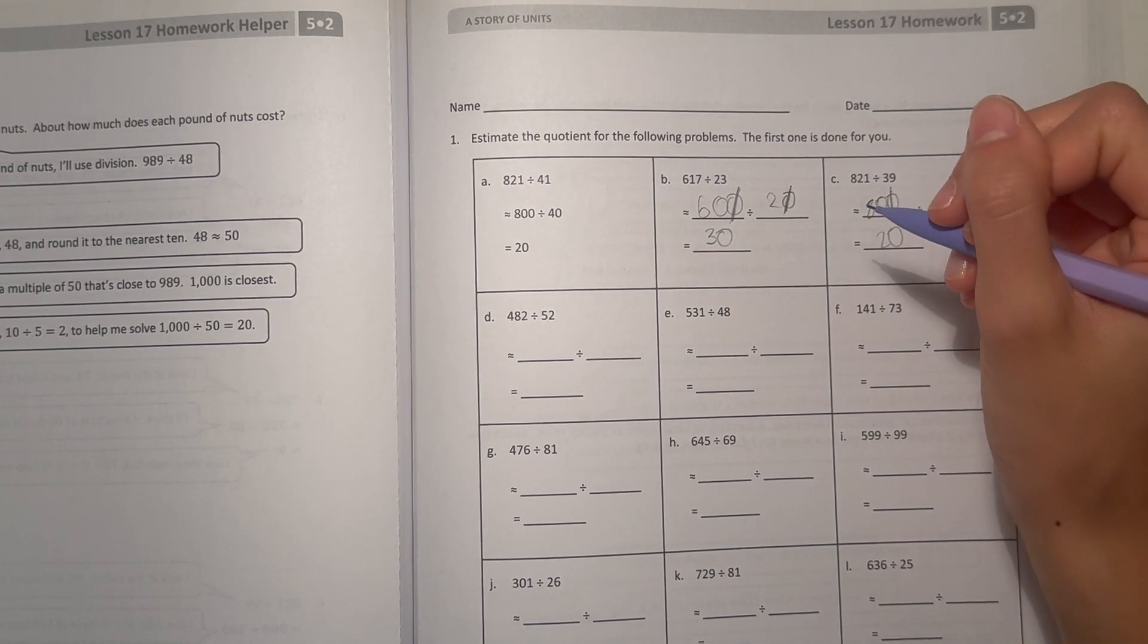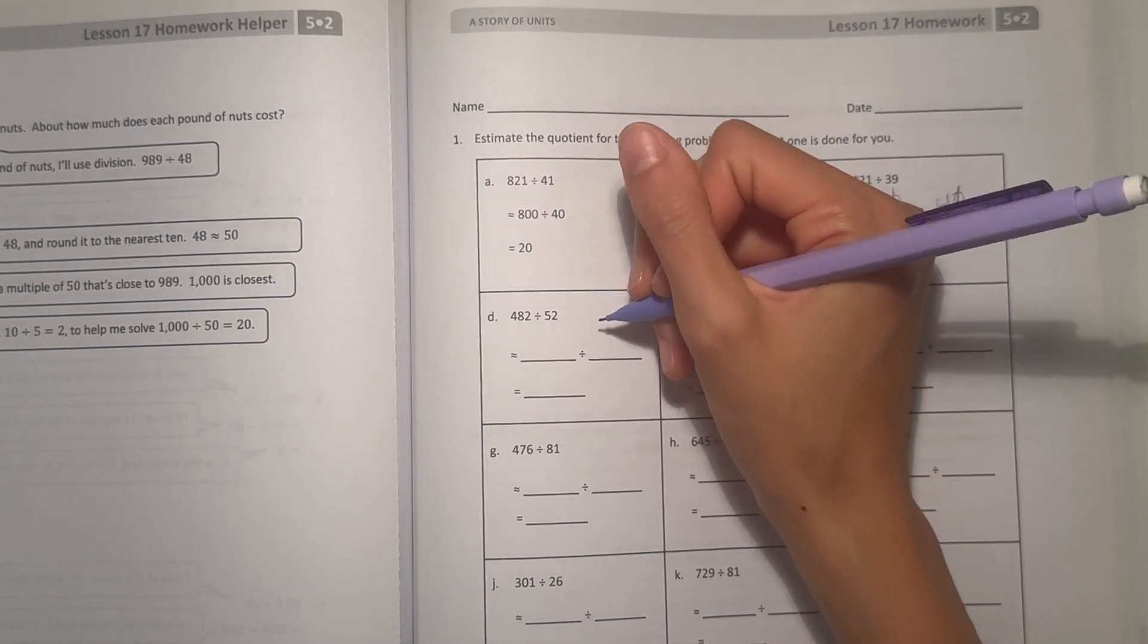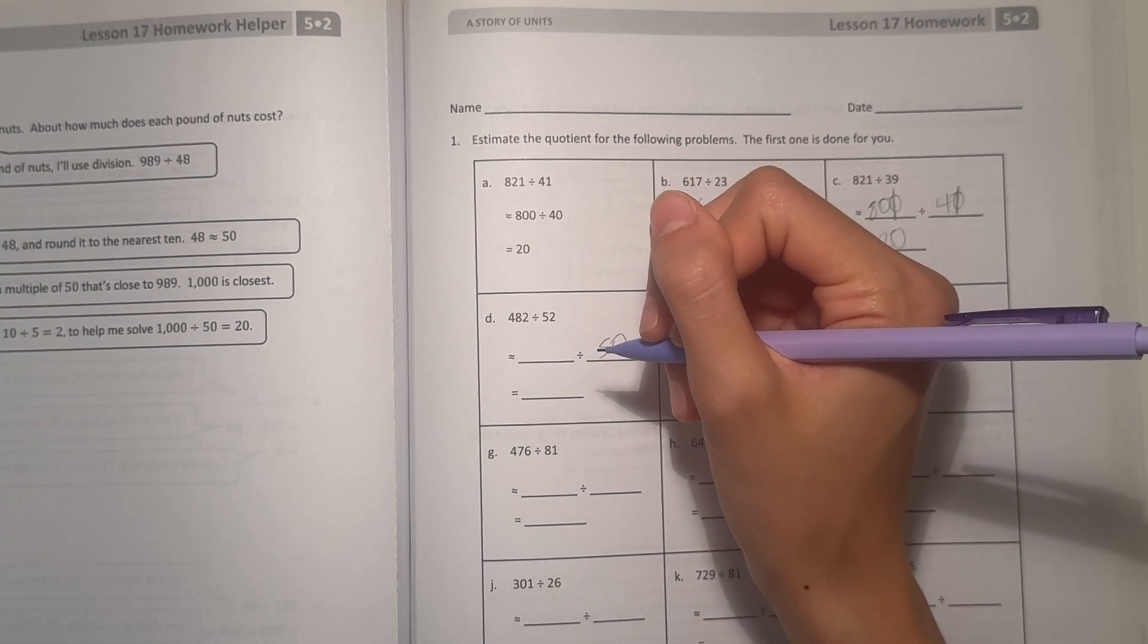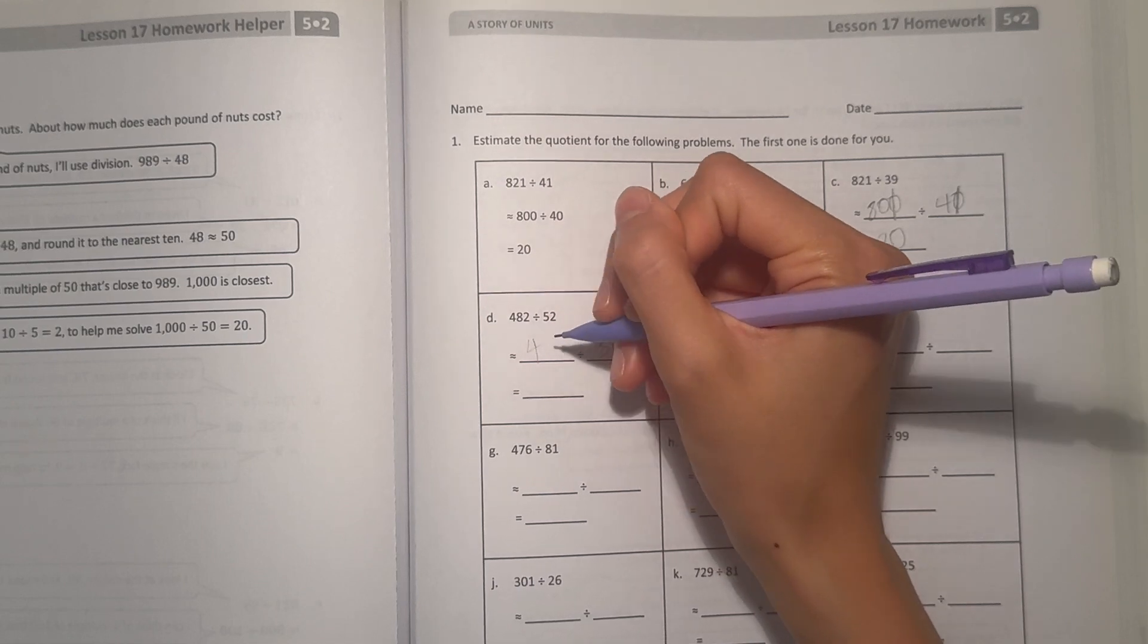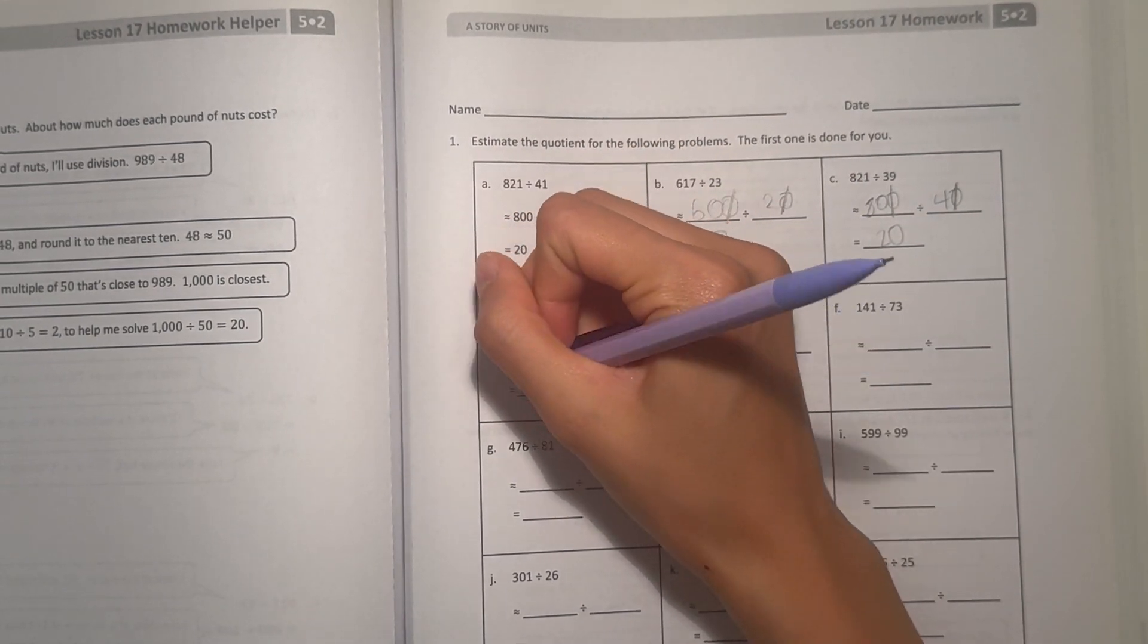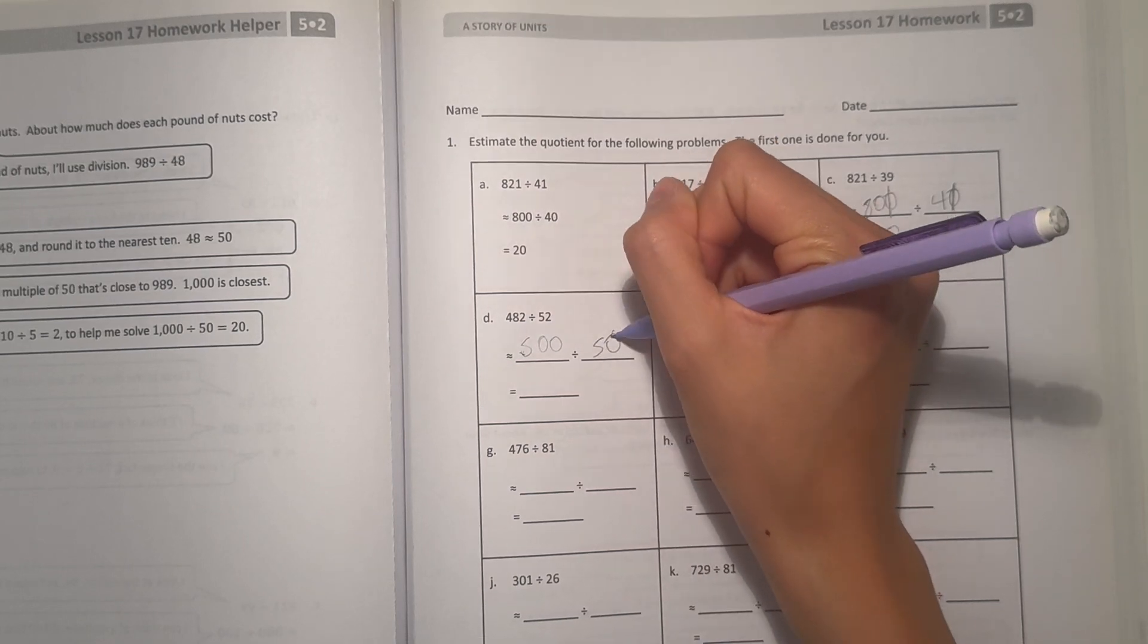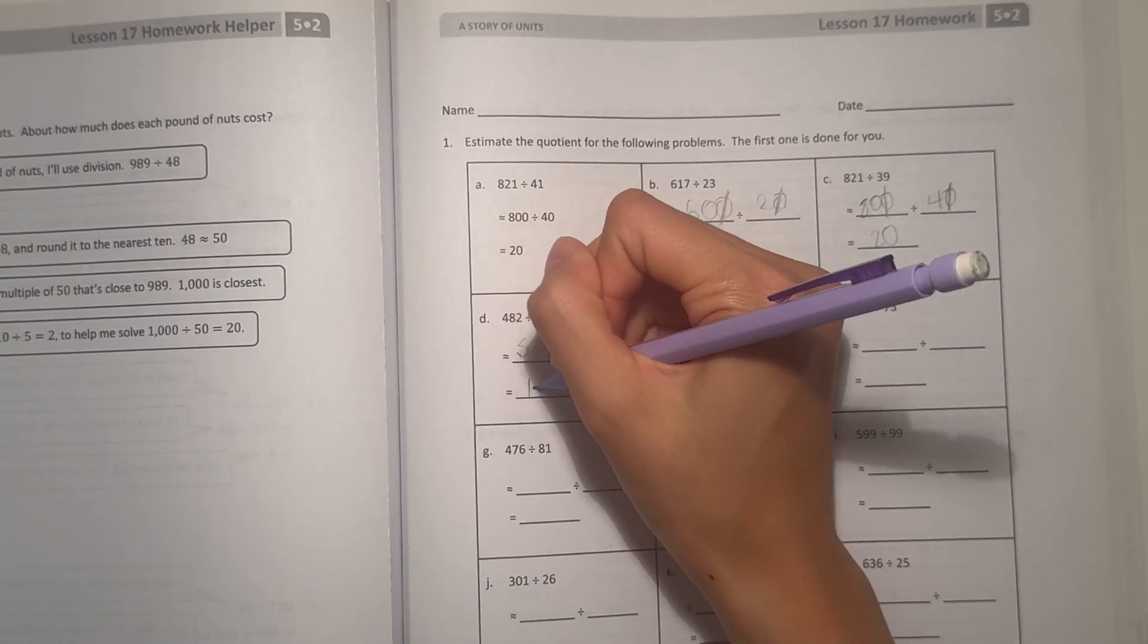All right, and D, 482 divided by 52. First round 52 to 50. And 482, let's see, we should actually just round to 500. And 500 divided by 50, cross off the tens, 50 divided by 5 is just 10.